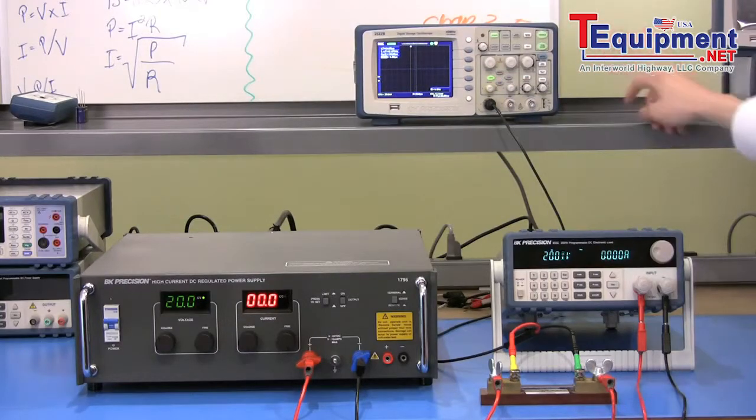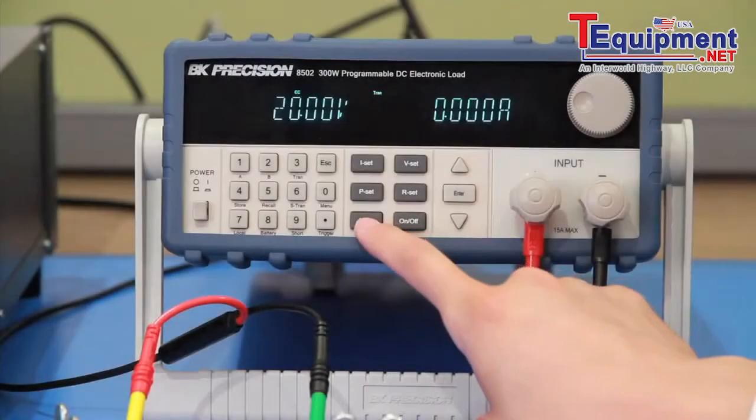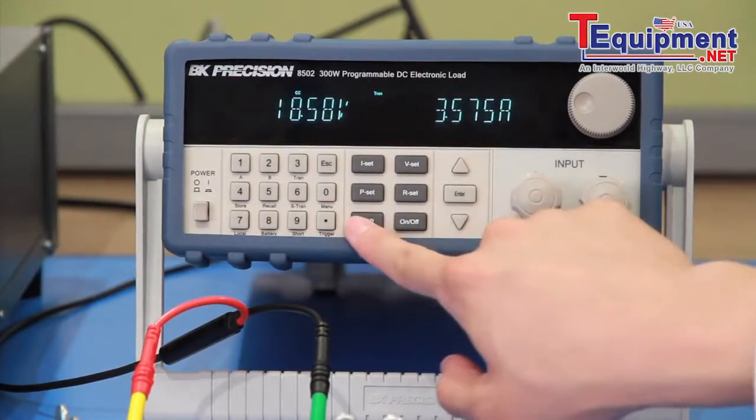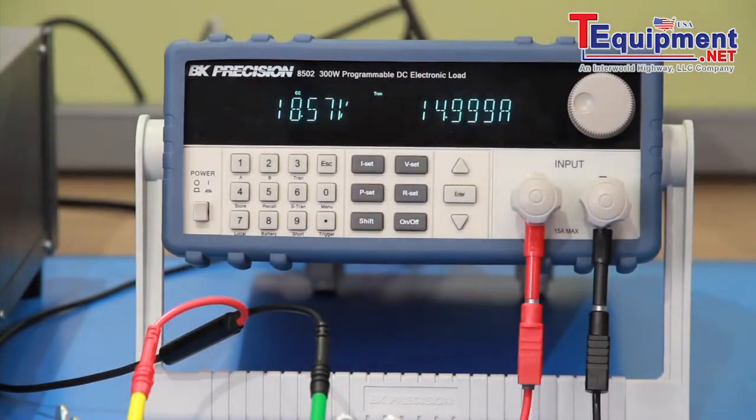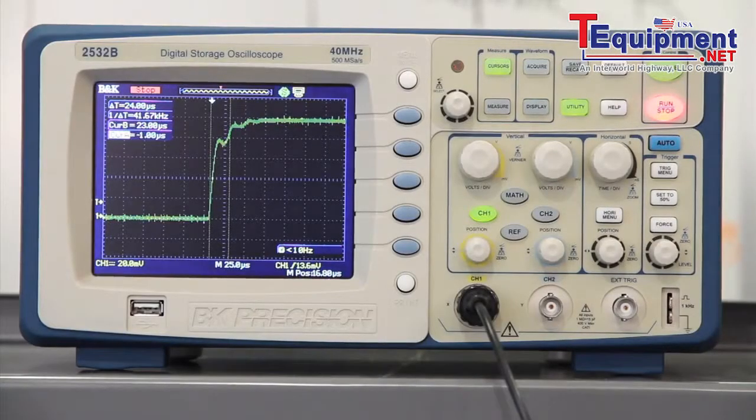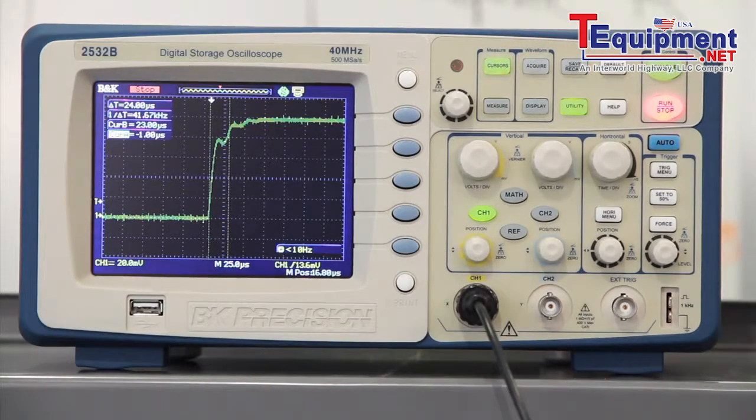Turn on the power supply's output and then turn on the DC load inputs. Now, I'm going to push the trigger button on the load to toggle between 0 amp and 15 amp. As soon as it toggles, it will capture a signal on the scope. We are going to focus on this shot to measure slew rate.